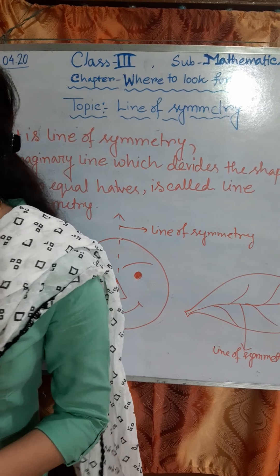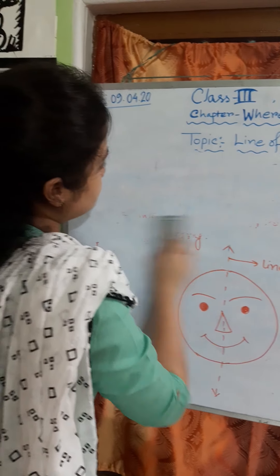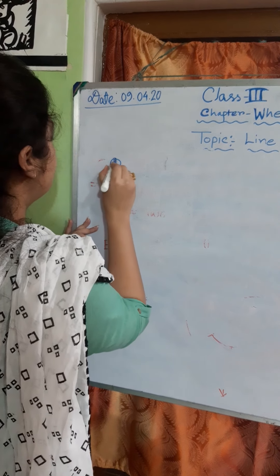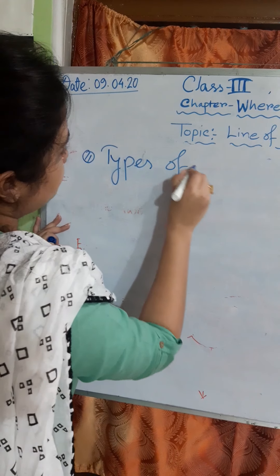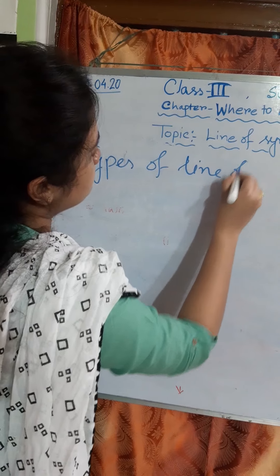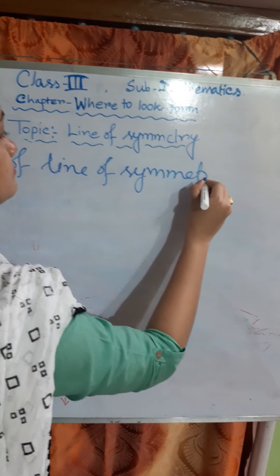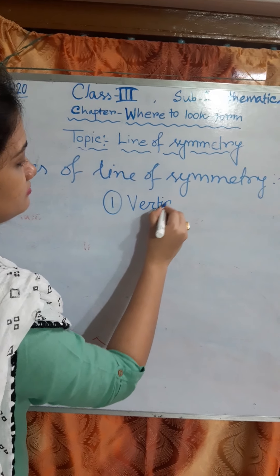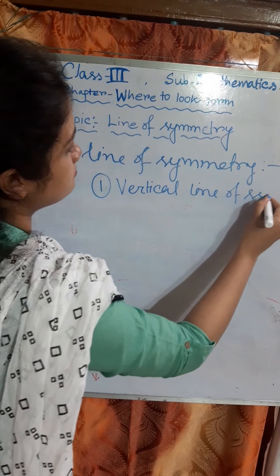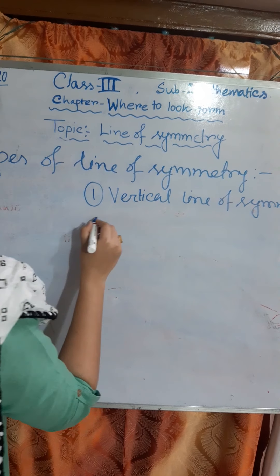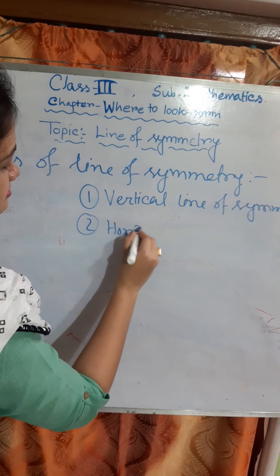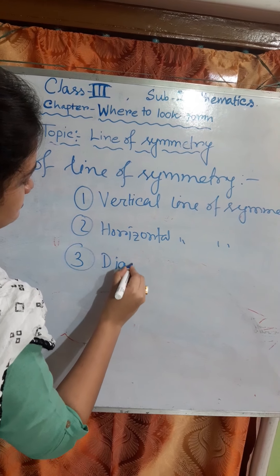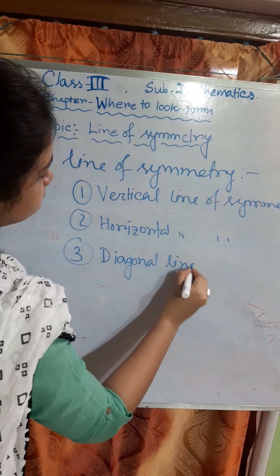Now we will discuss the types of line of symmetry. There are three types of line of symmetry: one, vertical line of symmetry; two, horizontal line of symmetry; and three, diagonal line of symmetry.